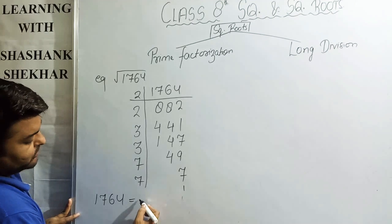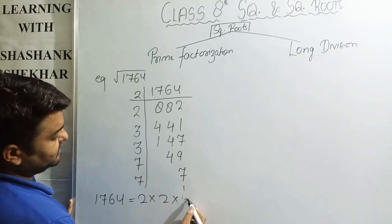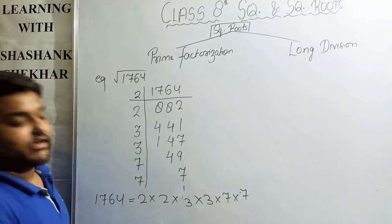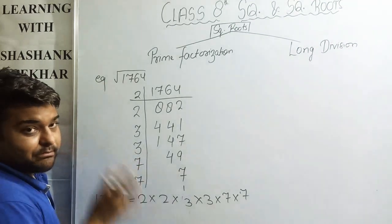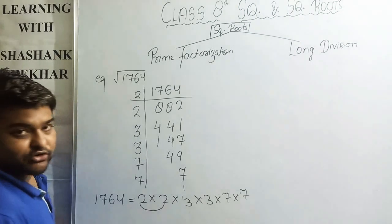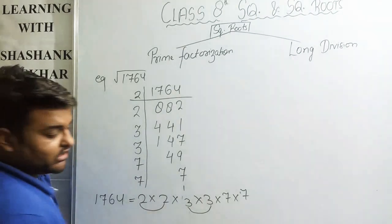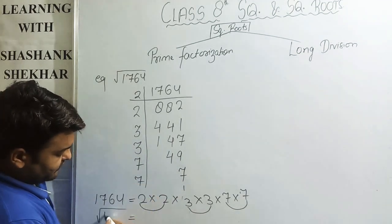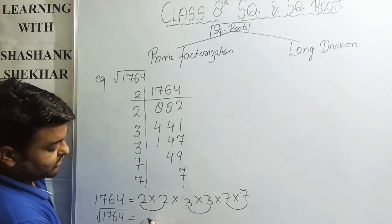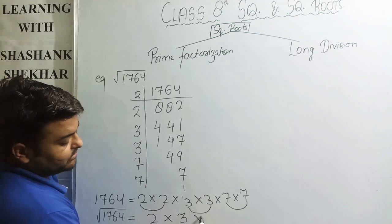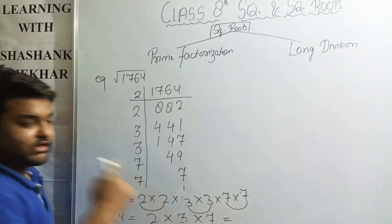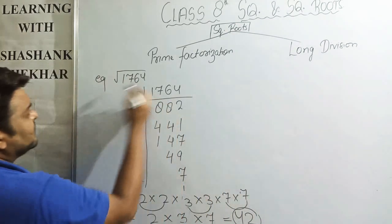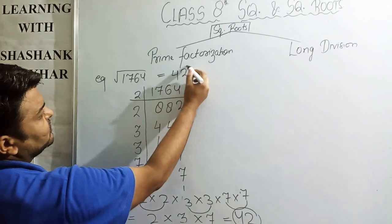Now we will write the factors of 1764. So 1764 equals 2 × 2 × 3 × 3 × 7 × 7. Now I will make the pairs: the pair of 2, the pair of 3, and the pair of 7. I will take out one digit from each pair. So the square root of 1764 equals 2 × 3 × 7.